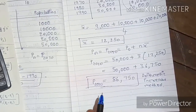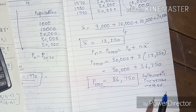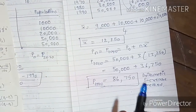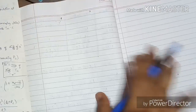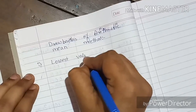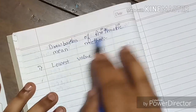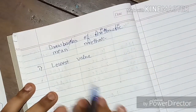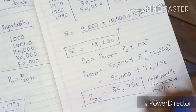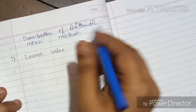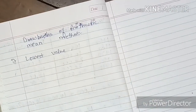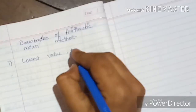Now, why do we use other methods? Because the arithmetic increase method has drawbacks. The first and main drawback is that it gives the lowest value of population. Other methods like the geometric increase method give much higher values than 86,750. The second drawback is that it is mainly used for old cities or settled cities, not rapidly growing ones.